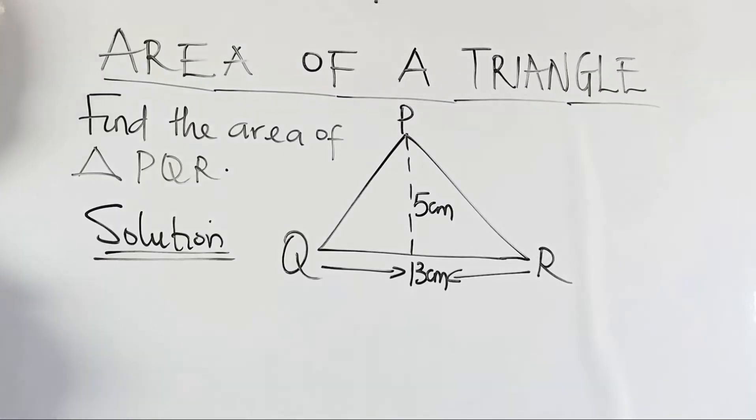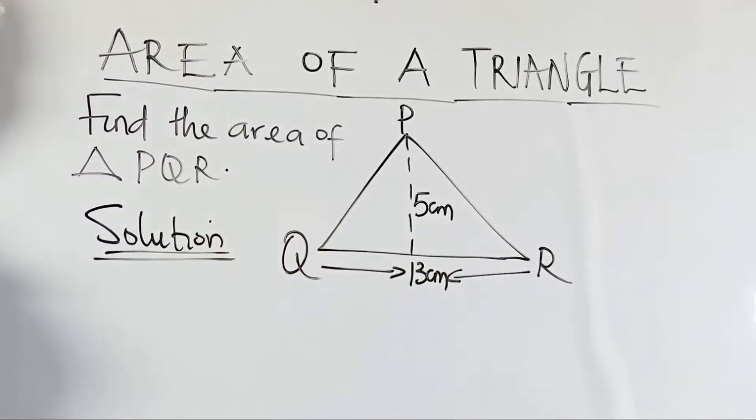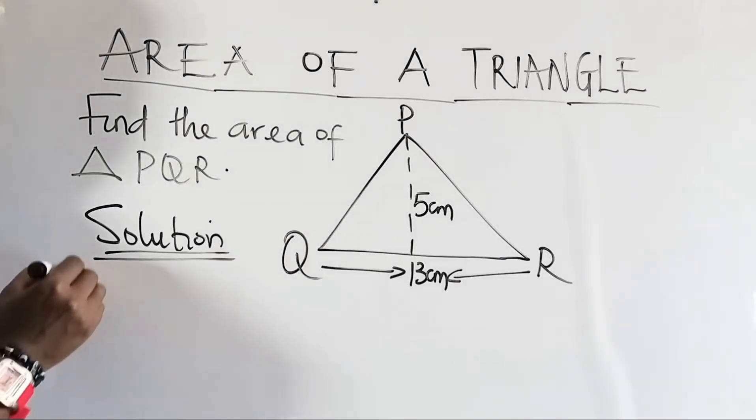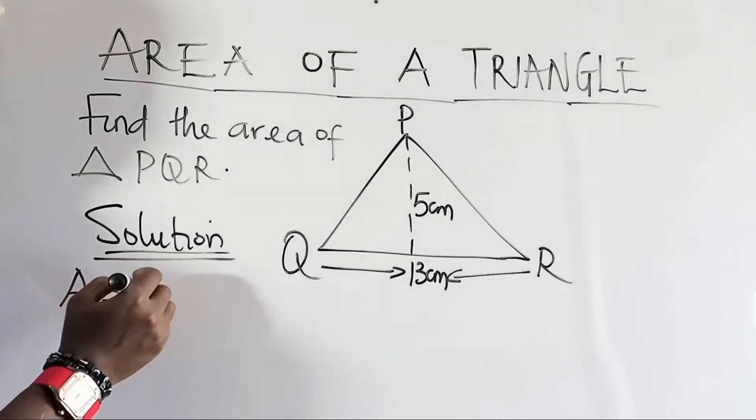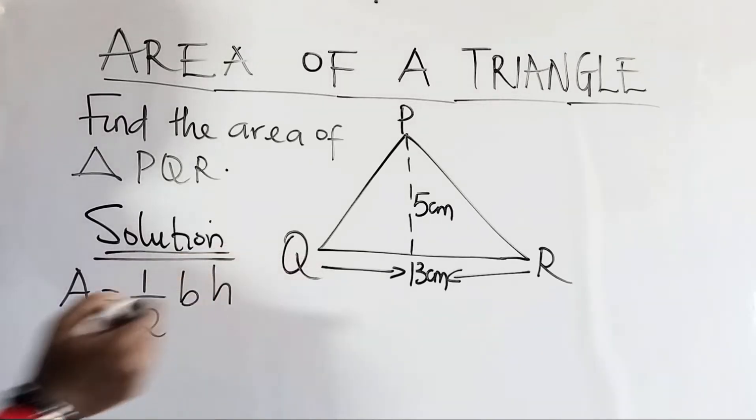And we have our first example here. We are to find the area of triangle PQR. To solve for the area of this triangle, the formula I'm going to use says the area of a triangle equals half base times the height.